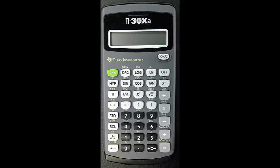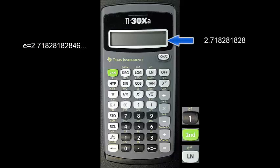If you are interested, the value of the natural number e can be found by pressing 1, then 2nd, then ln. The value is about 2.71828182846, etc.